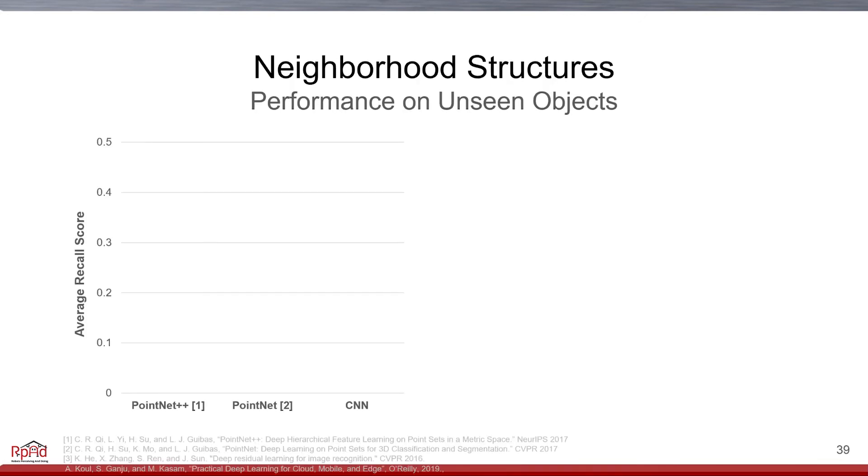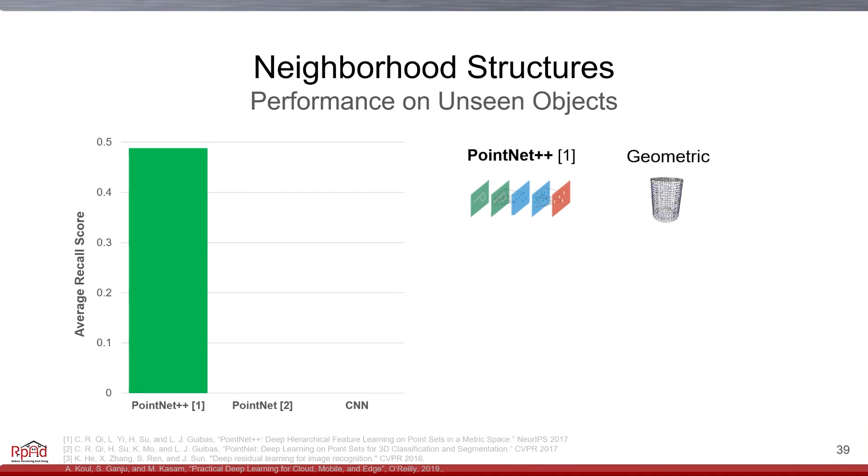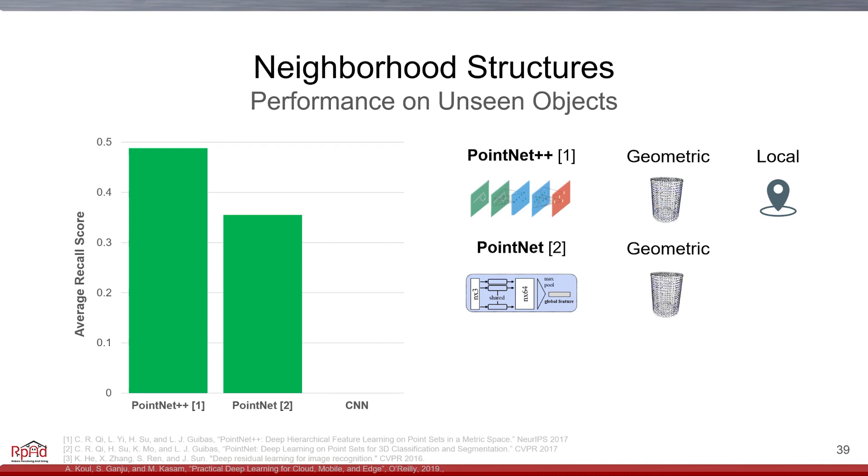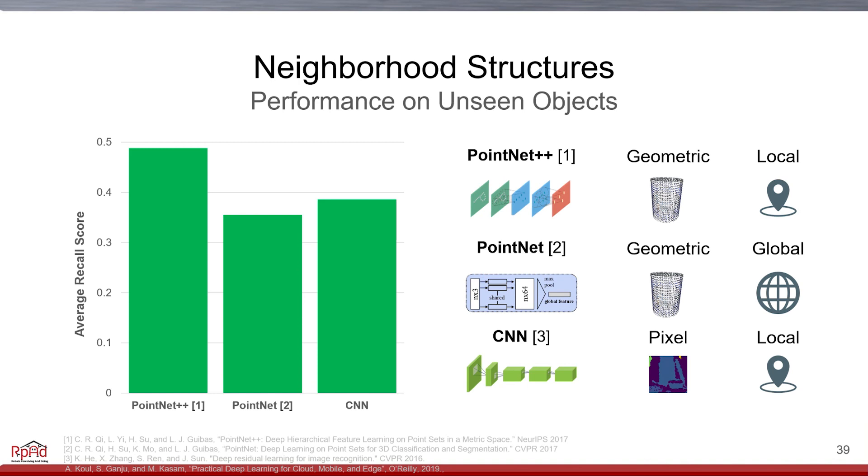With respect to how we define the neighborhood structures, we tried several structures in addition to what we used. PointNet++ geometrically structures the space, while still allowing for a local neighborhood definition in the continuous image space. On the other hand, PointNet performs worse on unseen objects. As even though it geometrically describes the image space, it does not allow for a local neighborhood structure. For convolutional neural networks, they have significantly stricter structure of the space, discretizing all locations into pixels.